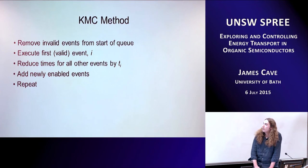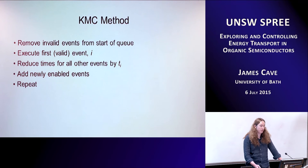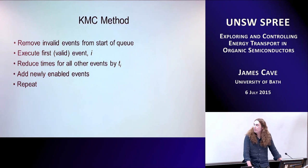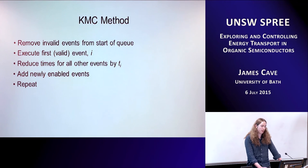One thing you must do is check for invalid events. For example, if an exciton recombines and then there's a queued event for it to move, you have to check: it's recombined, so it can no longer move — discard that event. Then execute the first event, reduce all other queued times by how long that took, and check what new events are now possible. If there's a new exciton, add its possible hops and recombination event. We ran our simulations for 100 microseconds each time.